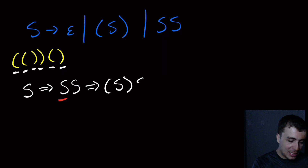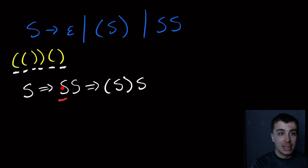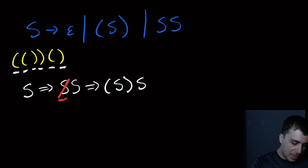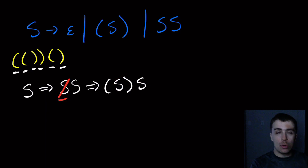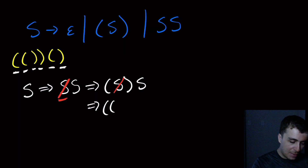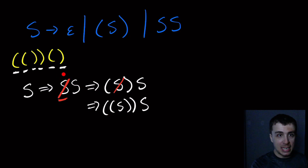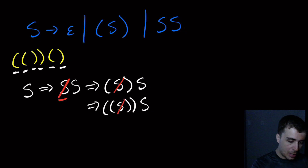So we have left S, right S. This second S is the same as that one, but this one is just applying the rule on that S. Effectively that S got replaced, and we got left S right. Then I'm going to apply the same rule again to the left S here, giving us left, left S, right, right S. Now since we have the two nested parentheses here, I want this S to go away because there's nothing inside, so I apply S goes to empty. That S gets killed off, and we get left, left, right, right, S.